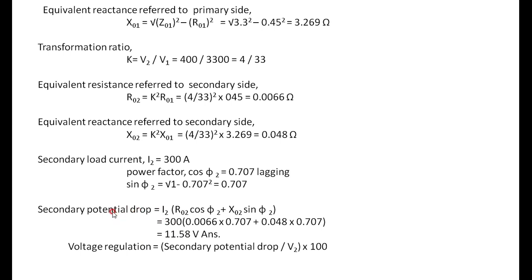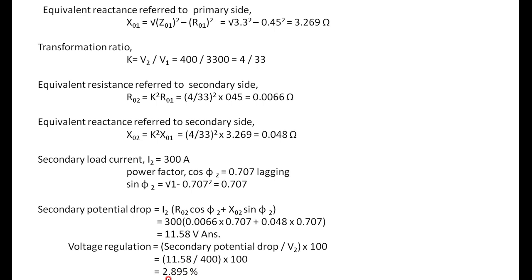Voltage regulation = voltage drop / no-load secondary voltage. The no-load secondary voltage is 400 volts. Therefore regulation = 11.58 / 400 × 100 = 2.895%. That is the percentage voltage regulation. Very simple — based on the data, we go on calculating the values.